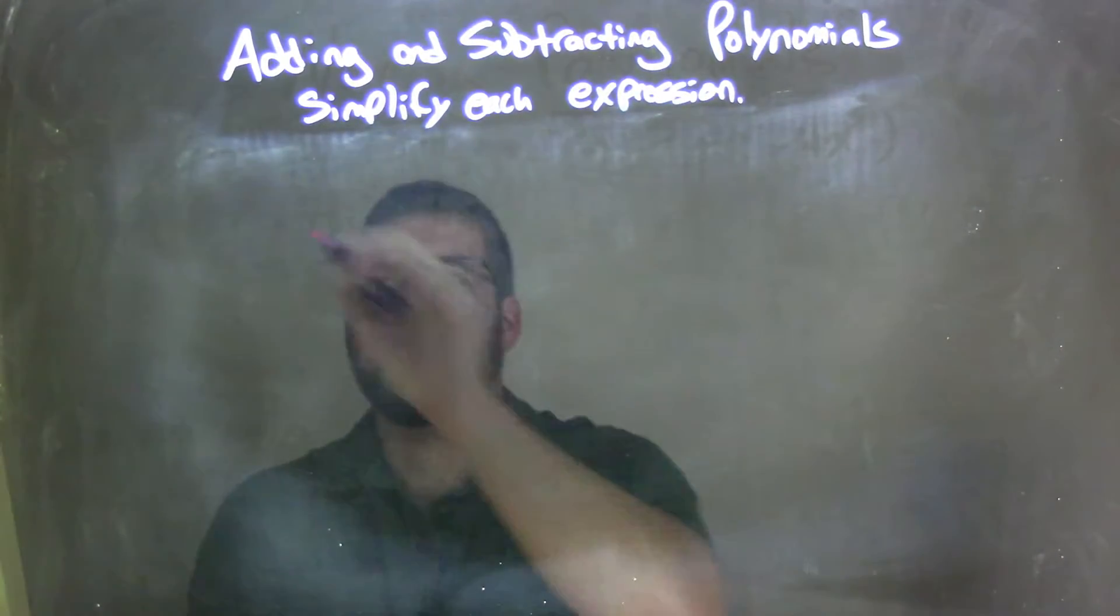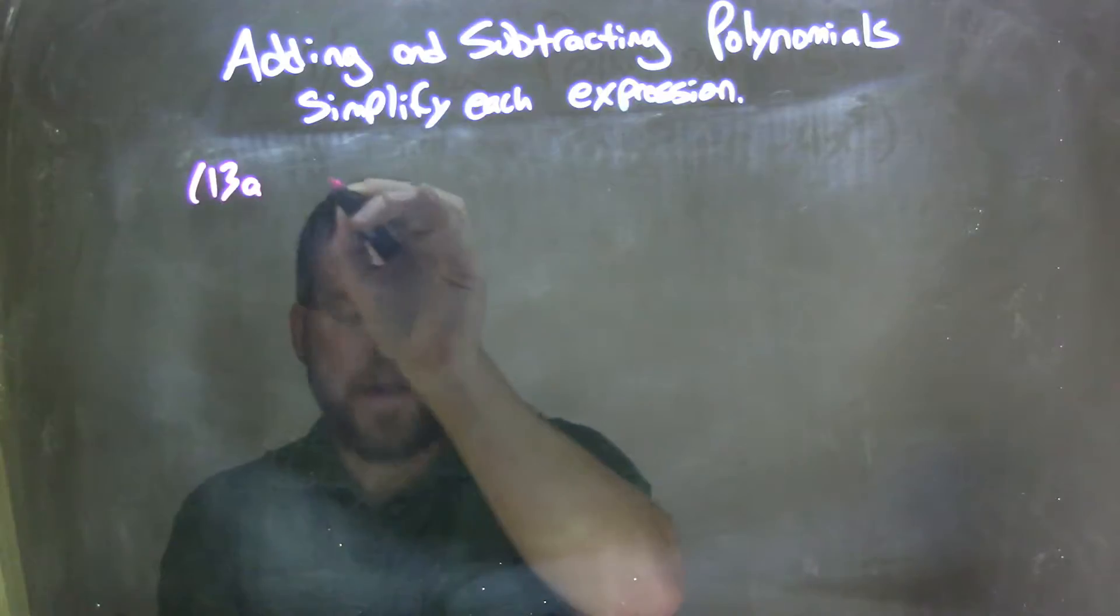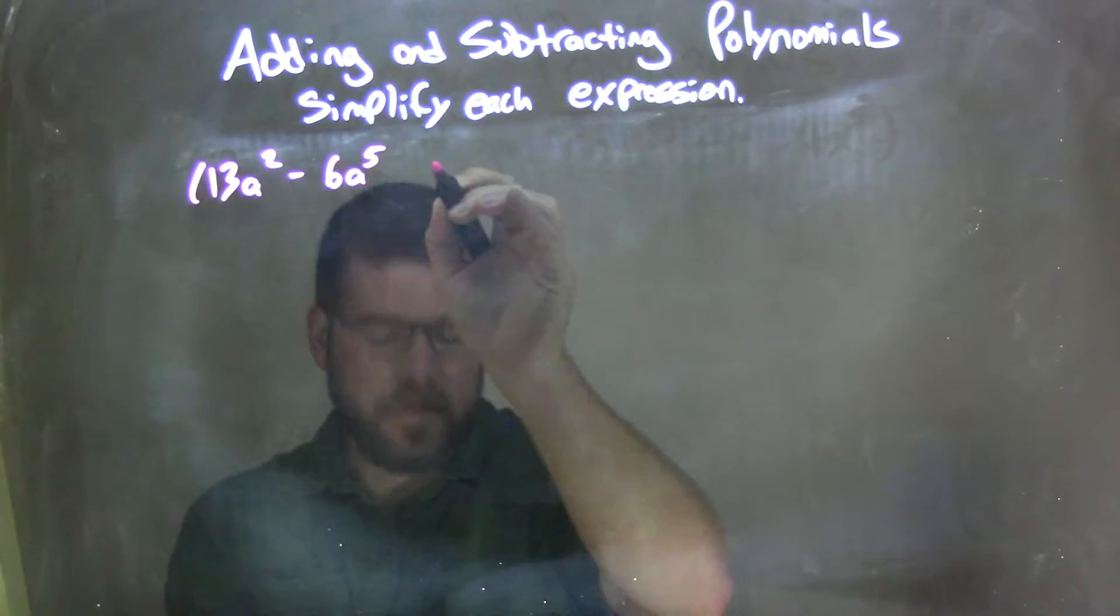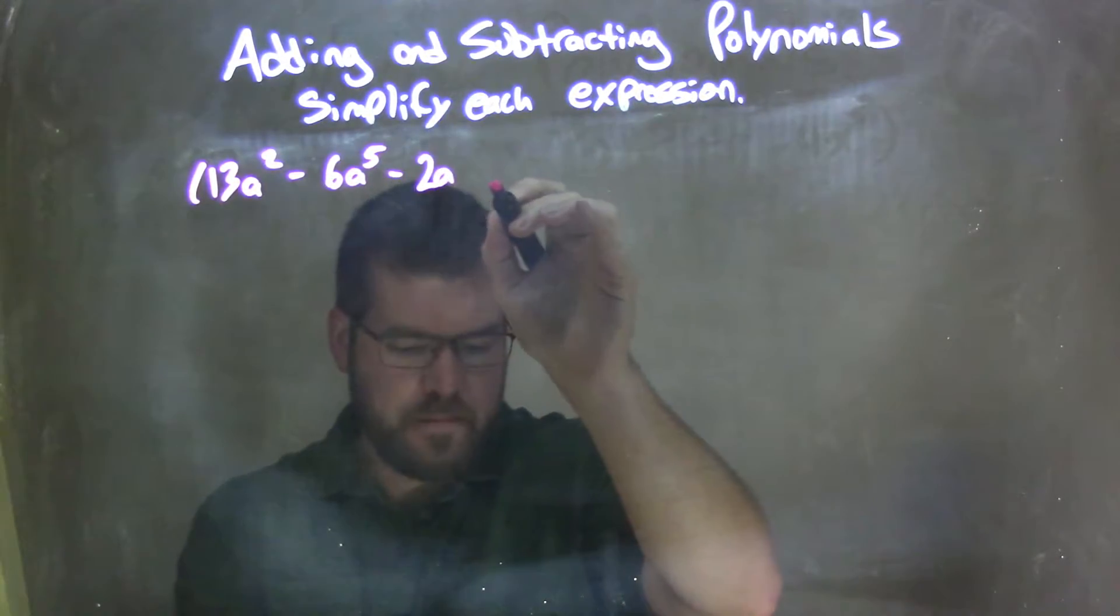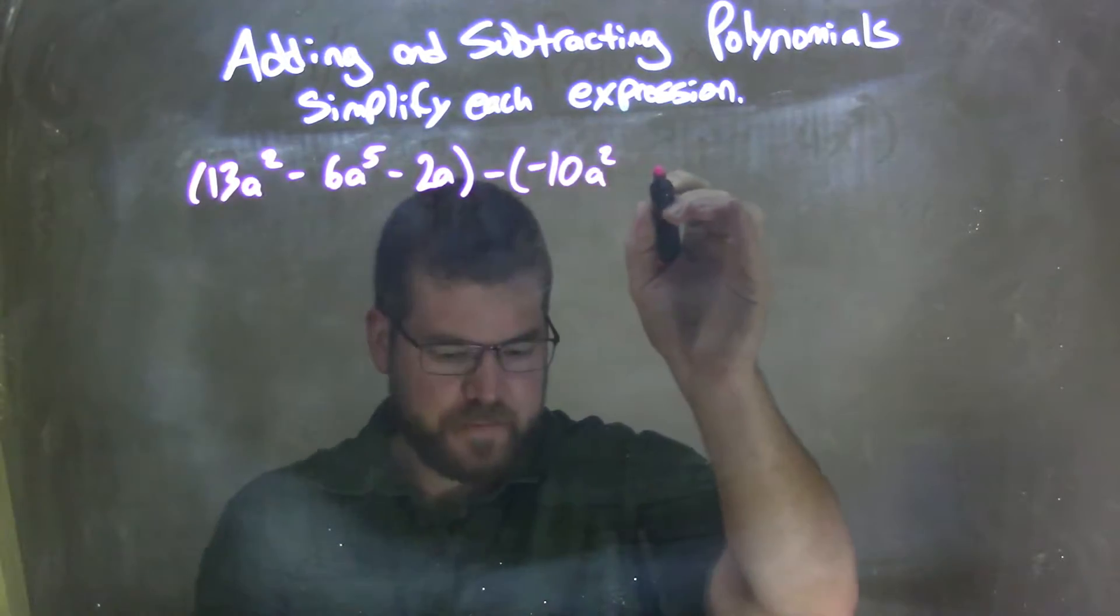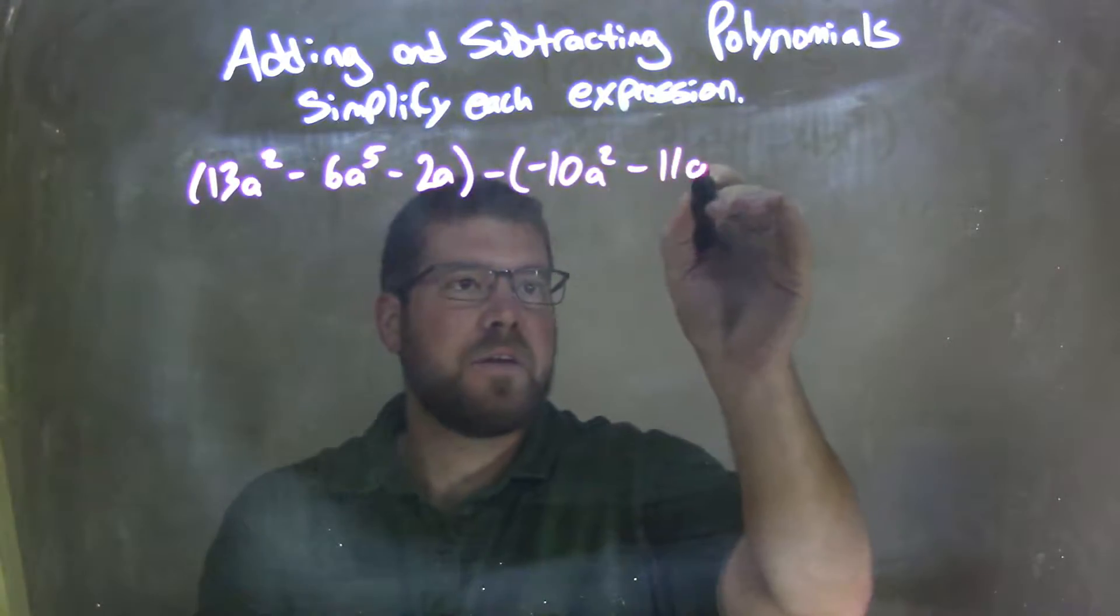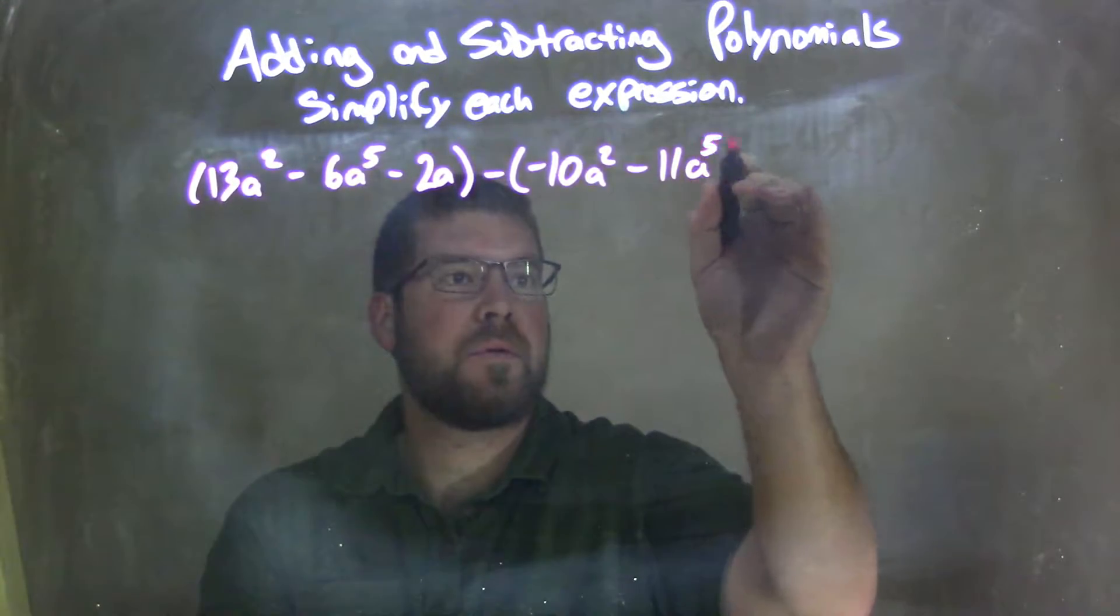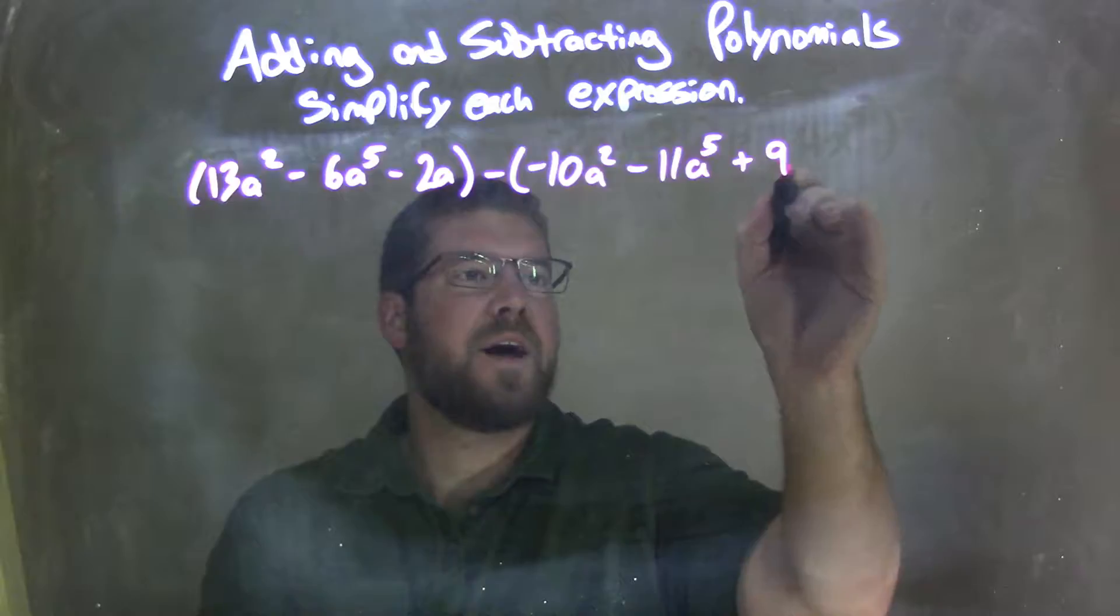So if I was given this polynomial: 13a to the second power, minus 6a to the 5th, minus 2a, closed parentheses, minus, in new parentheses, negative 10a squared, minus 11a to the 5th, plus 9a.